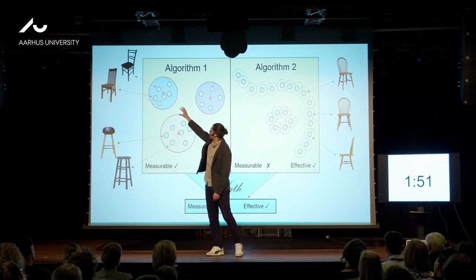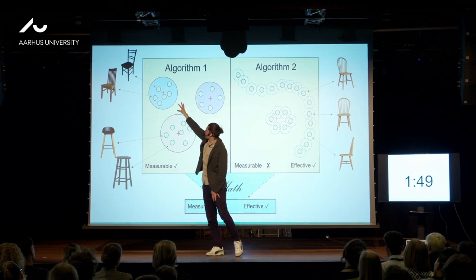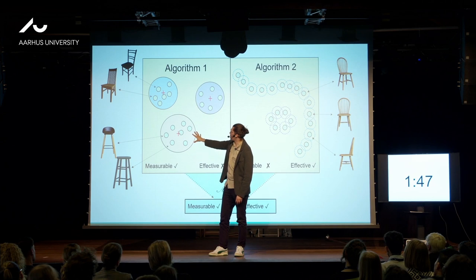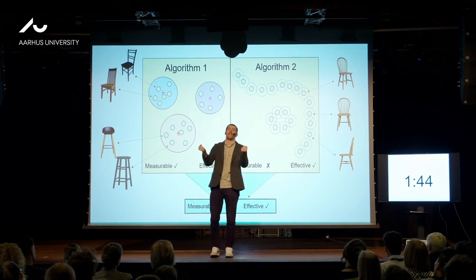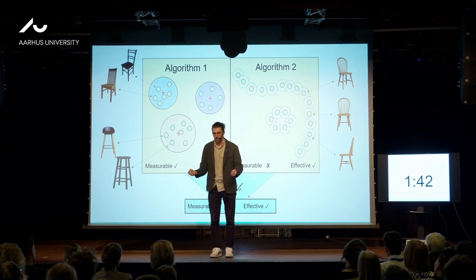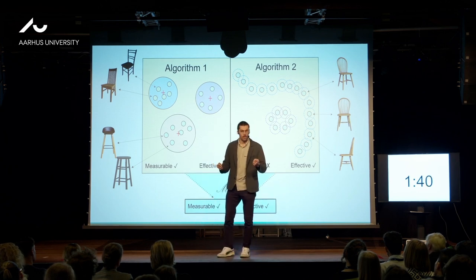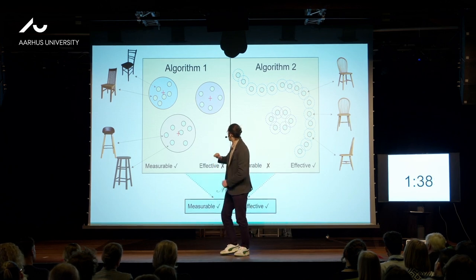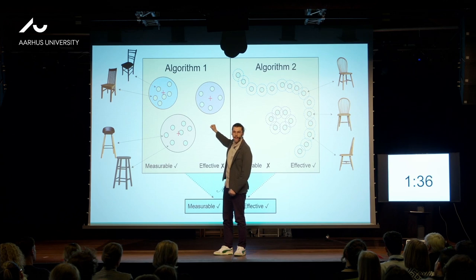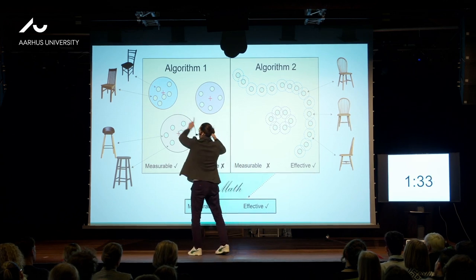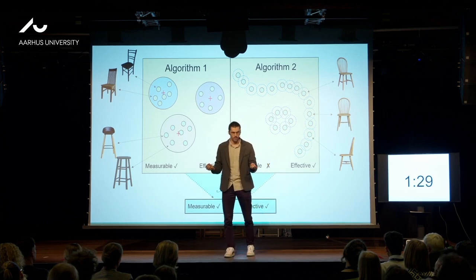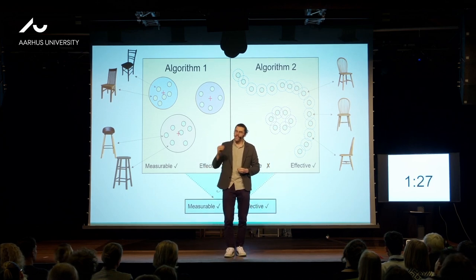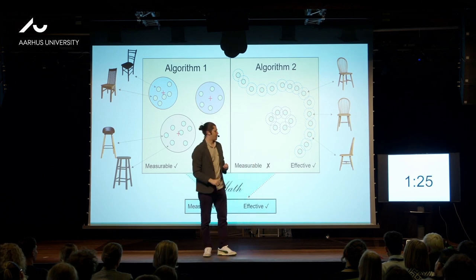All of the chairs are here and all of the stools are here, so this circle kind of captures the essence of what it means to be a chair — and that's what I mean by measurable. You give me a new data point and say it's a chair — well, I can tell you how wrong you are. You are that far away from my idea of a chair. So it's measurable, but it's not very effective.